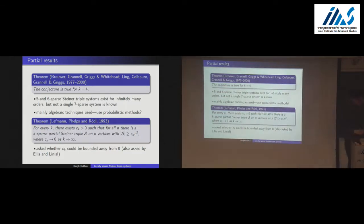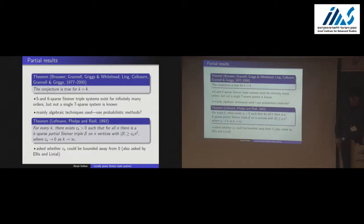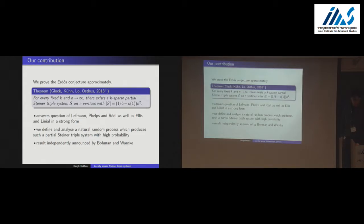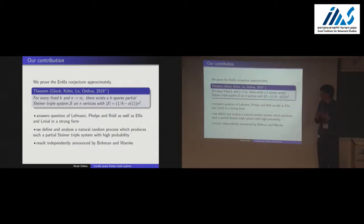The question was: can we at least bound C_K away from 0? This was also asked by David Ellis and Lati Linial independently. The result I want to talk about is that we can prove the Erdős conjecture approximately: we can find an almost Steiner triple system which is K-sparse, where the number of triples found is almost as large as in a full Steiner triple system.